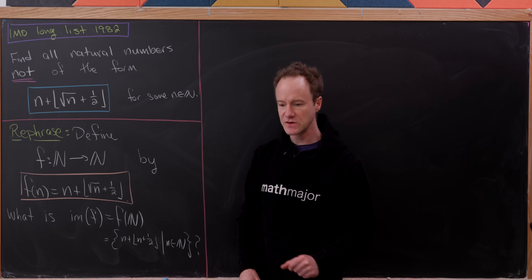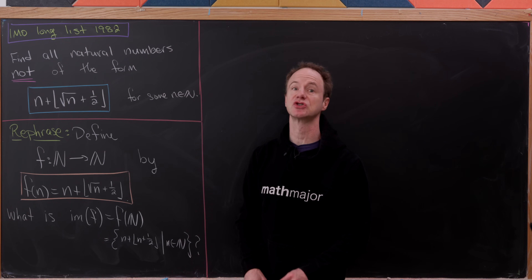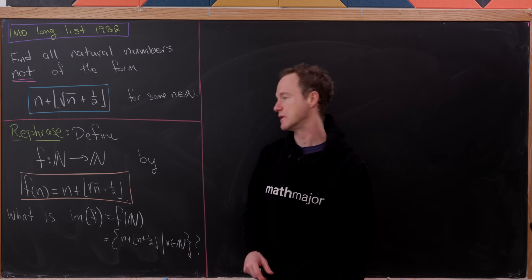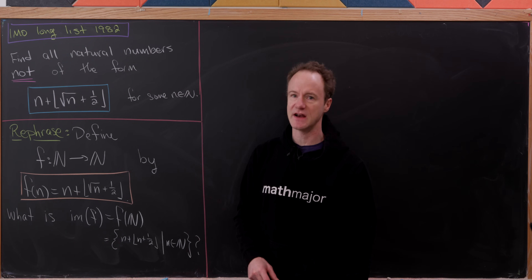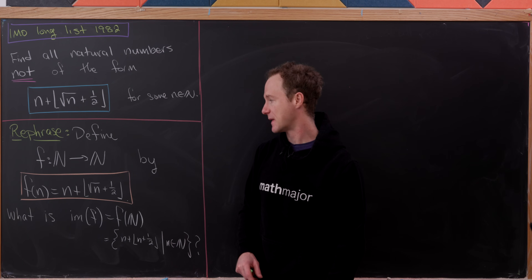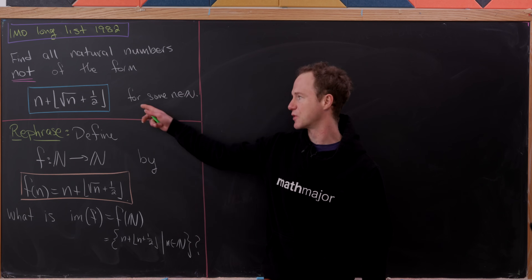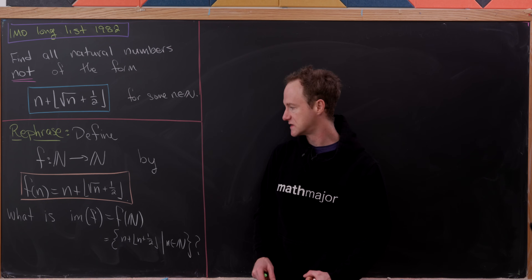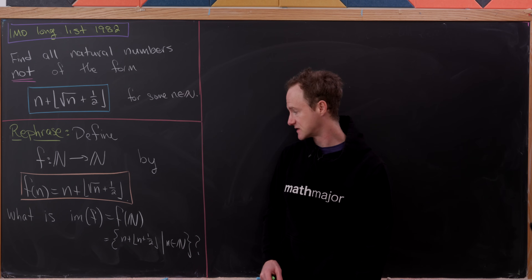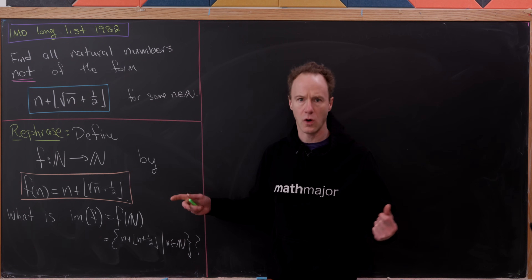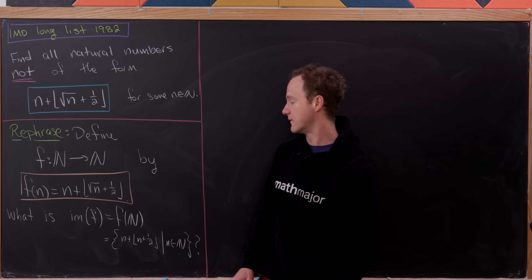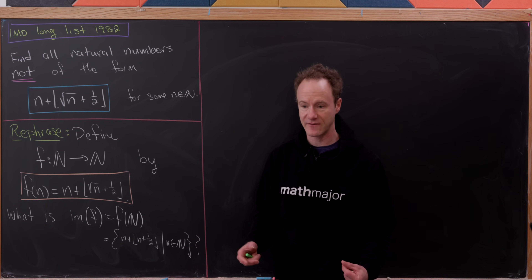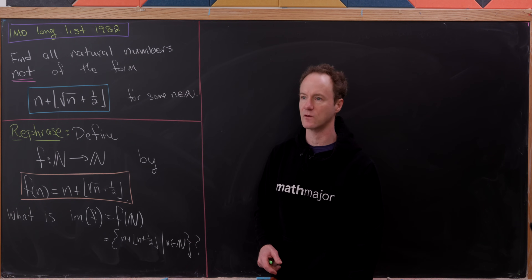The first thing we're going to do is rephrase this a little bit — not strictly necessary, but it will help us notationally as we move forward. Let's define a function f from the natural numbers to the natural numbers by f(n) = n + floor(√(n + ½)). Our goal is to determine the image of f, that is, everything of the form n + floor(√(n + ½)), because then we know exactly what is not of that form — it's simply the complement of that set in the natural numbers.